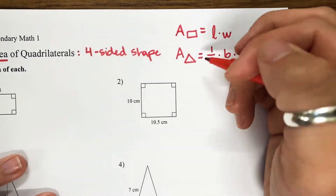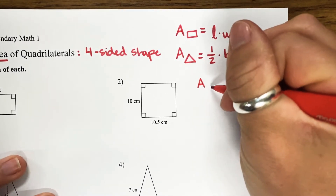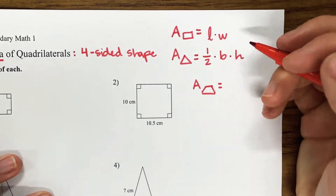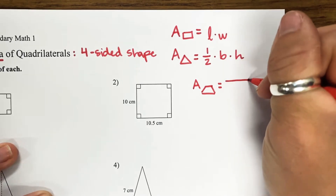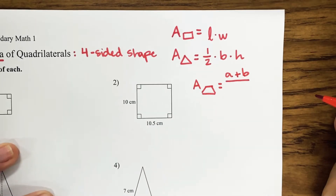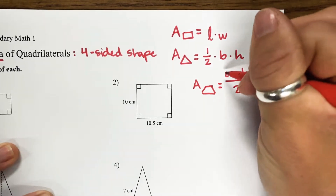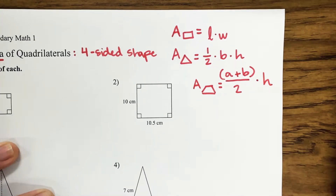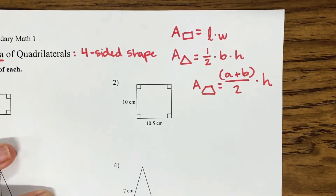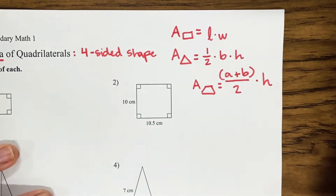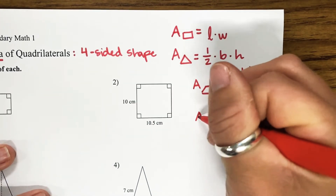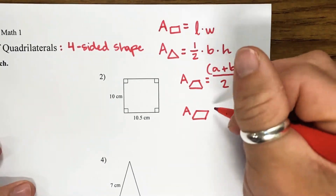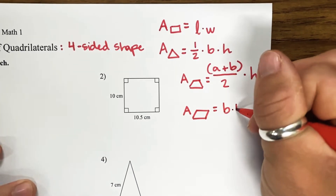We're going to need a new area formula today, and this one is going to be the area of a trapezoid. The area of a trapezoid is going to be a plus b divided by 2 — so first we add a plus b and divide by 2, and then we multiply by the height. Our last one is basically the same as a rectangle, but we call this a parallelogram. This we just say base times height.